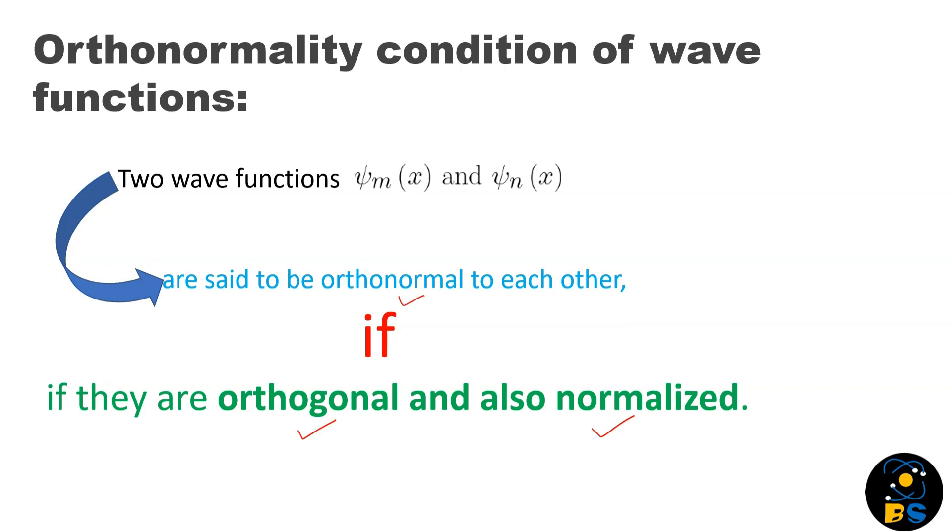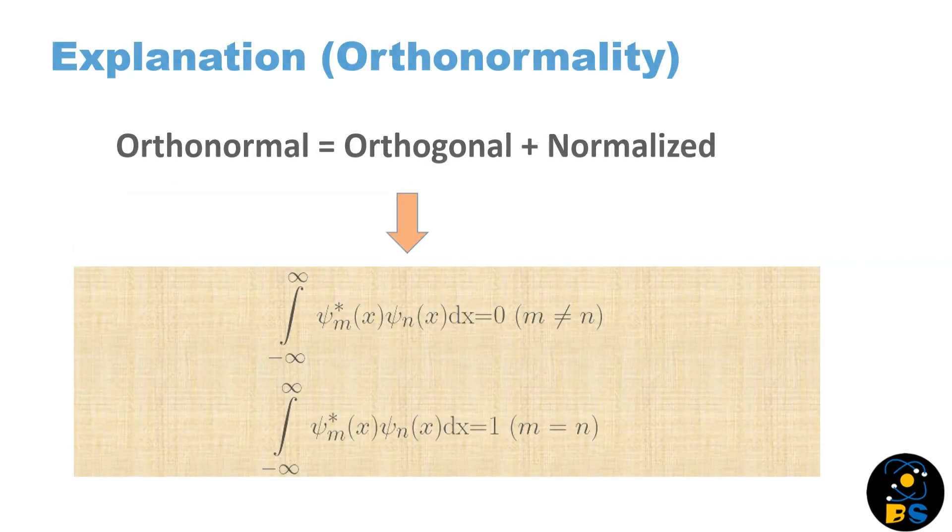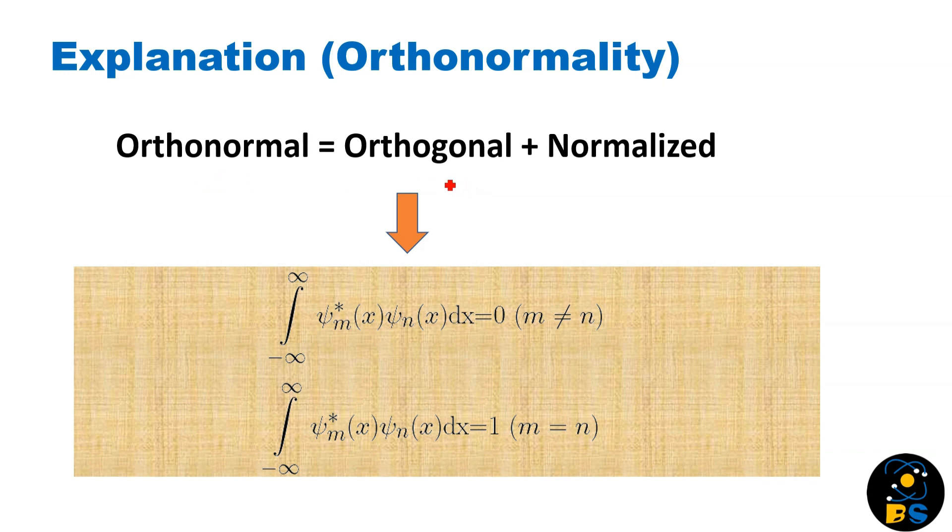Let's understand this in detail. Orthonormal equals orthogonal and normalized. If we combine both equations, the first condition represents orthogonality and the second condition represents normalization. The combination of both these conditions makes the orthonormality condition.